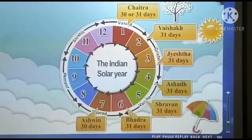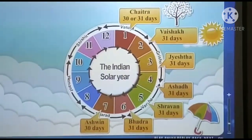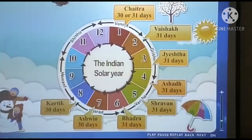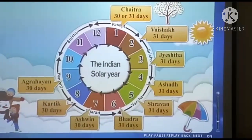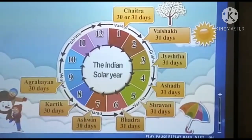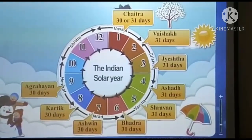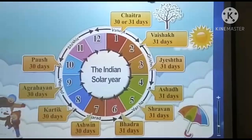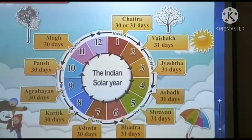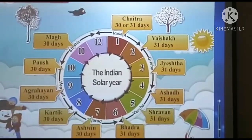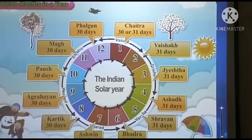Now comes the month of Ashwin. Ashwin is the seventh month and has 30 days. Karthik is the eighth month and has 30 days. Then comes Agrahayan. Agrahayan is the ninth month and has 30 days. Then comes Posh. Posh is the tenth month and has 30 days. Magh is the eleventh month and has 30 days. And Pahagum comes last. Pahagum is the twelfth month and has 30 days.